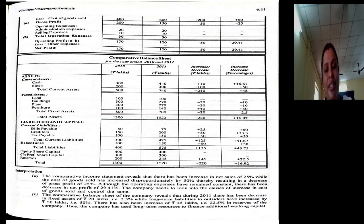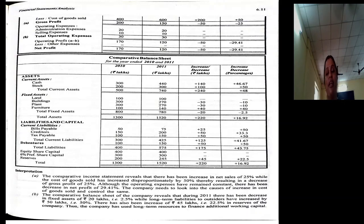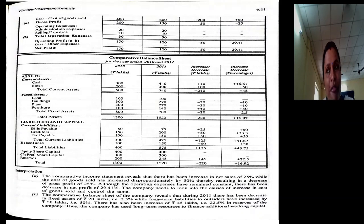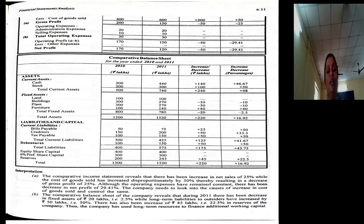Operating profit is 170 and 120 — decreased by 50, so there is a decrease of 29.41%. As there are no non-operating expenses, we arrive at a net profit of 170 and 120, which has decreased by 50, that is 29.41%. This is how to prepare the comparative income statement for illustration 6.